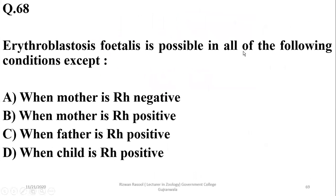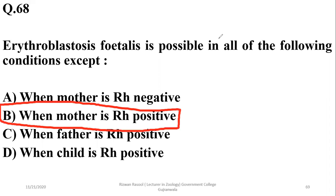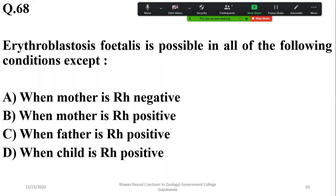Question number 68: Erythroblastosis fetalis is possible in all of the following conditions except when mother is RH positive. If the mother is RH positive, there are no chances of RH antibody production. In all other cases — when mother is RH negative, father is RH positive, or child is RH positive — there will be chances of RH antibody production in the mother. So B is the right option.